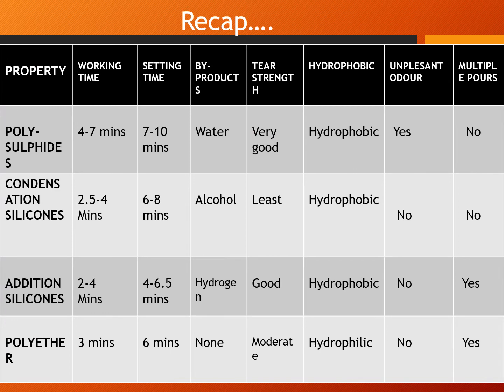Let us have a recap of the properties of various elastomeric impression materials. Here is a table illustrating the properties and comparison of the various elastomeric impression materials. The working time is highest for polysulfide; setting time is also highest for polysulfide. Polyether does not have a byproduct in the reaction whereas all others do. Tear strength is least for condensation silicone. Polysulfide, condensation, and addition silicones are hydrophobic whereas polyether is hydrophilic. Unpleasant odor is present for polysulfide, and multiple pours can be done with addition silicones and polyether.